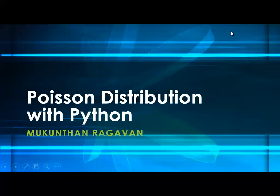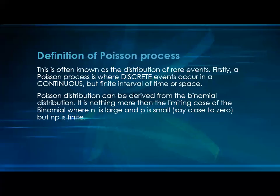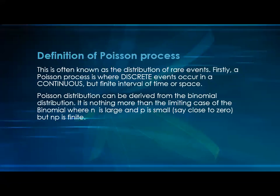Hi folks, this is Mundan Raghavan. Today we are going to see the Poisson distribution with Python. The definition of Poisson process — this is often known as the distribution of rare events. A Poisson process is where discrete events occur in a continuous but finite interval of time or space.